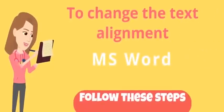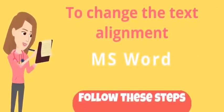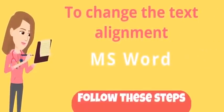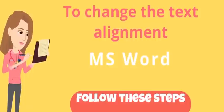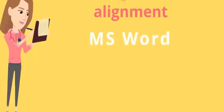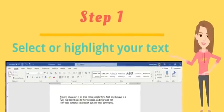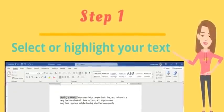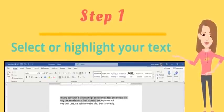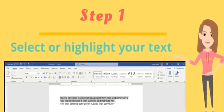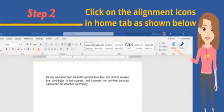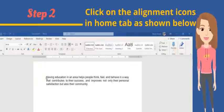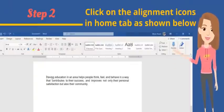To change the text alignment in a Word document, follow the following steps. Step 1: Select or highlight your text. Step 2: Click on the alignment icons in the Home tab as shown below.